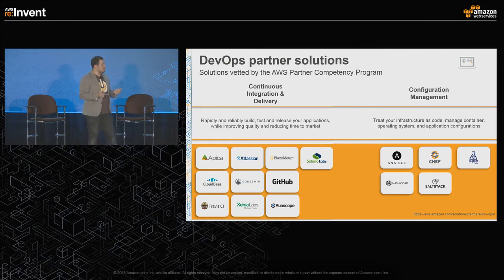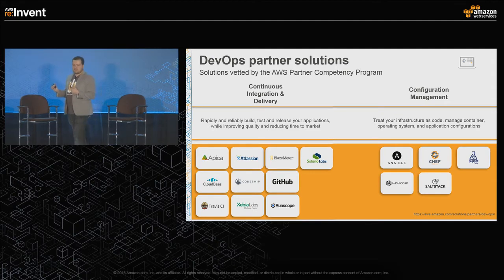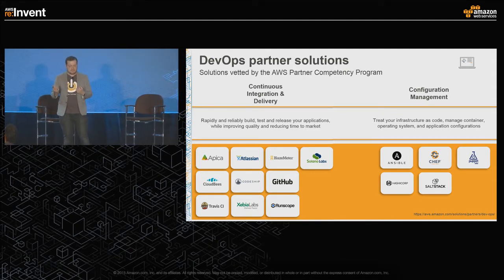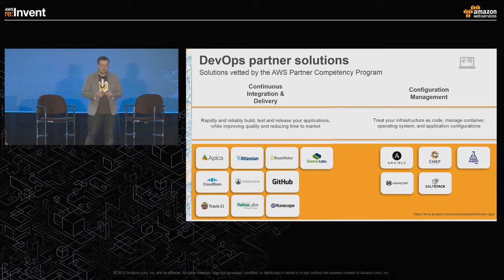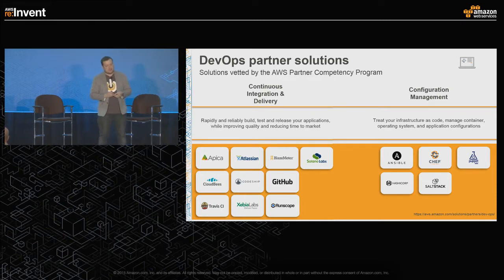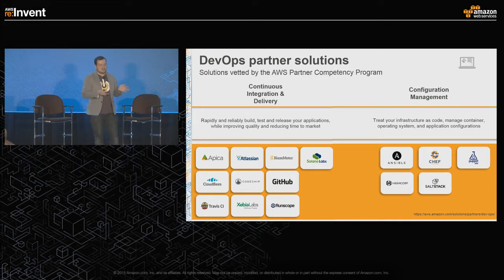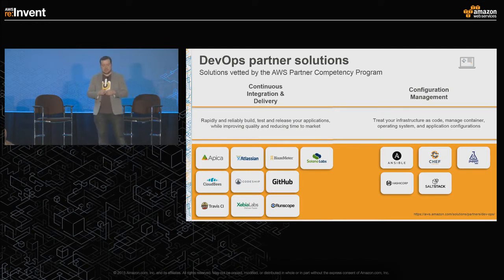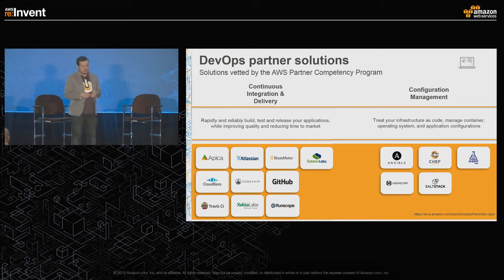We now have an AWS Partner Competency Program for DevOps solutions, broken into two categories. The first covers configuration management partners — Chef, Puppet, SaltStack, Ansible, and HashiCorp — all vetted through this program. The second covers continuous integration and delivery partners, including CloudBees, CodeShape, GitHub, BlazeMeter, and Travis CI. I'll be showing BlazeMeter in today's demo.